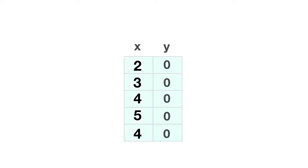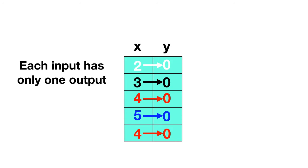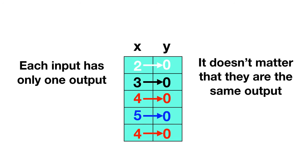Let's look at another that's a little tricky. Here's a table of inputs and outputs. First we can start by looking for any inputs that are listed more than once. We can see that the 4 is listed twice, but both times the 4 gives us an output of 0. In fact, inputs of 2, 3, and 5 also all give us an output of 0. You might be tempted to say this is a relation because many different inputs all give the same output. But remember that in a function, the rule is each input has only one output. It doesn't matter that all of the outputs are the same. As long as the same input is not giving multiple different outputs, this can still be called a function.